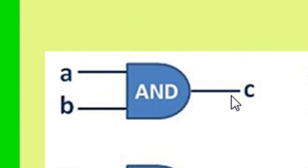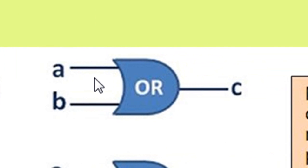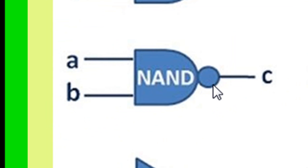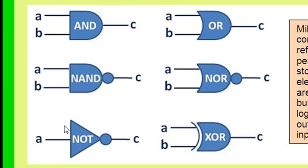An AND gate will generate an electrical charge on its output only if both inputs have an electrical charge. An OR gate produces a charge if either or both inputs have a charge. The circle symbol negates things — a NAND gate generates a signal only if there's no charge present on both inputs. These circuits can be used to express Boolean algebra, and they can be implemented in electronic form to build up logic circuits from these very tiny, simple components.